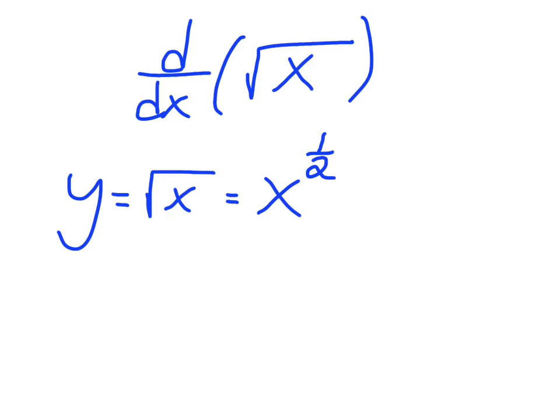So, if you remember the power rule, basically what we do is we take the exponent right here, 1 half, and we multiply the coefficient. So, since our coefficient of x to the 1 half is just 1, it's just 1 half times 1, which is still 1 half.